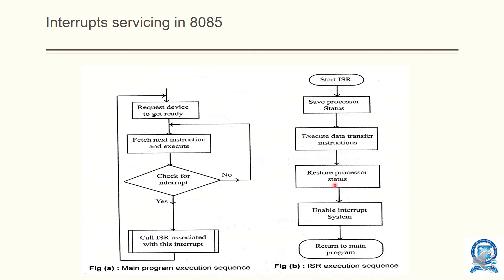After executing the data transfer instructions, the ISR restores the processor status. Once the interrupt is serviced, the program counter automatically returns to the main program and execution continues. You can see in the interrupt service routine that it returns back to the main program, and the next step of execution takes place so the main program runs in order.